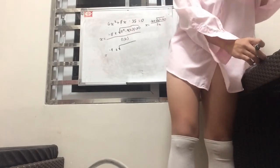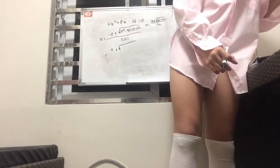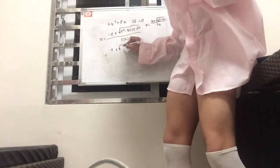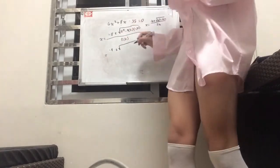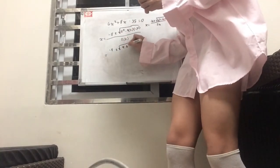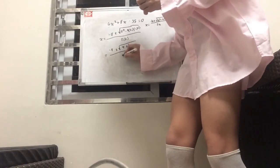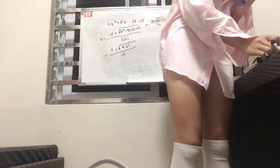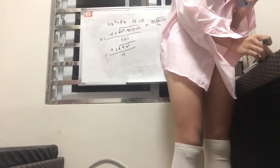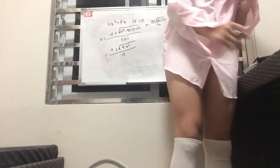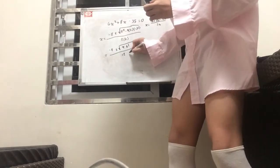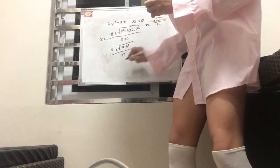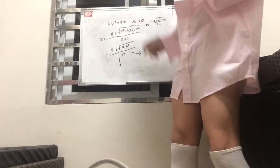11 squared is 121 minus 4 times 6 times negative 35. So, that would be square root of 961 all over 12.